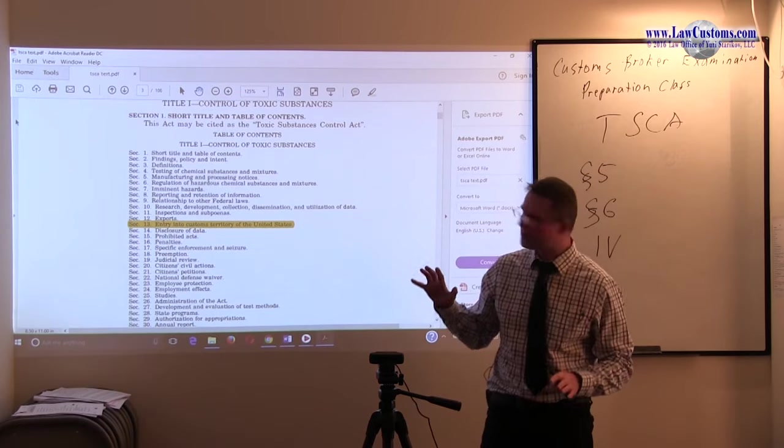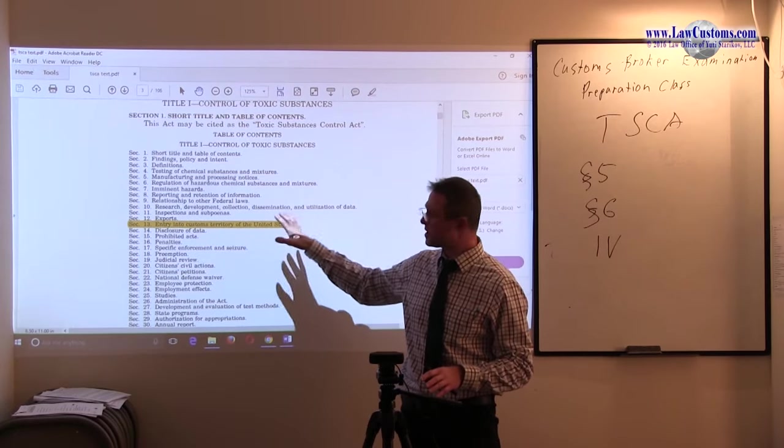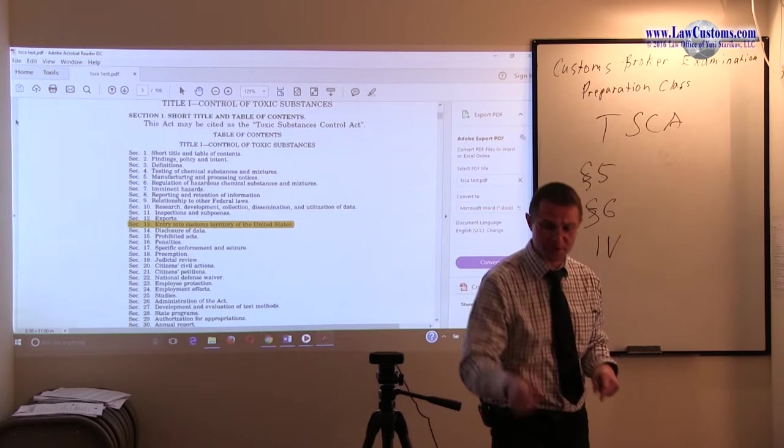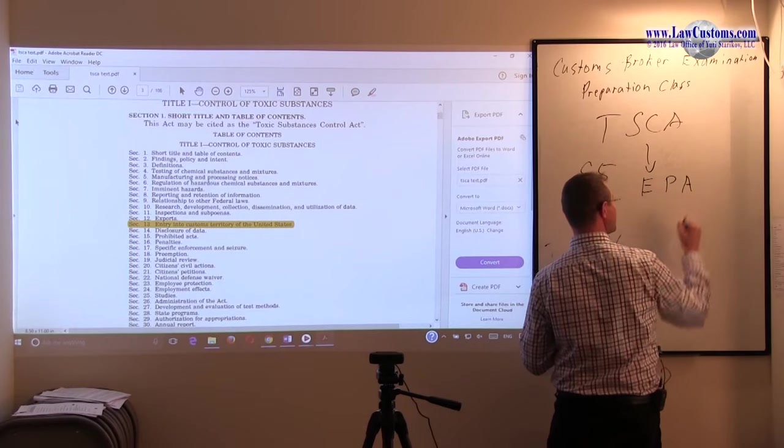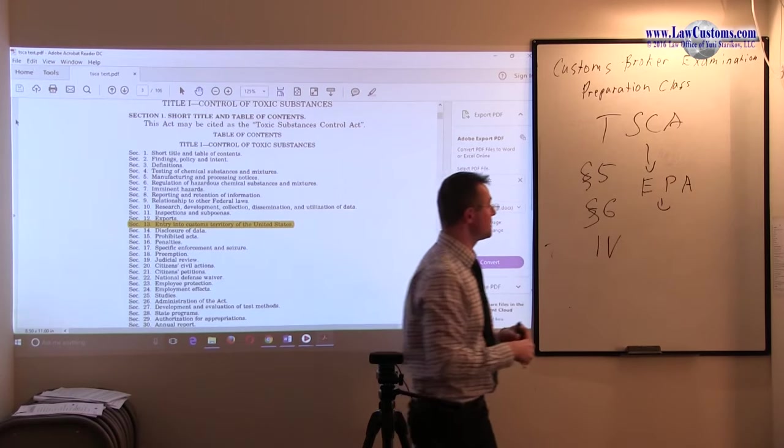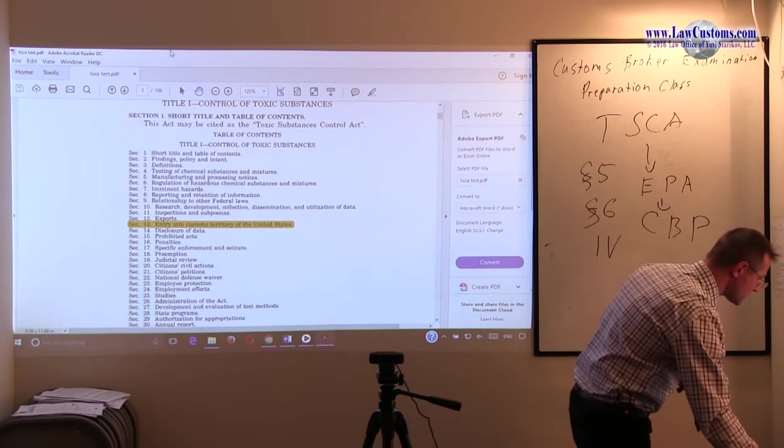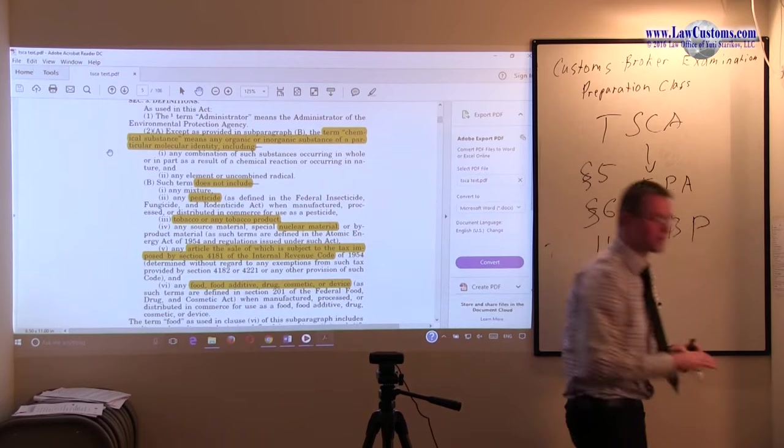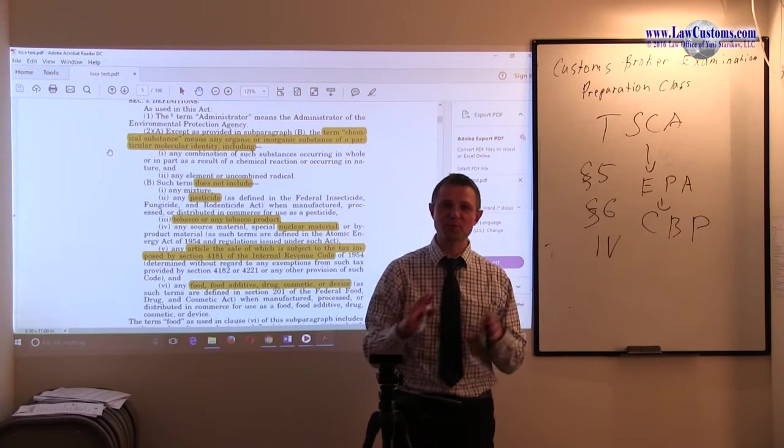This means it's subject to the Environmental Protection Agency (EPA). The EPA can say to Customs, 'You can't bring this product into the country,' and Customs must comply. Let's look at what chemicals are part of the Toxic Substances Control Act, what are not, and what applications this carries for licensed customs brokers.